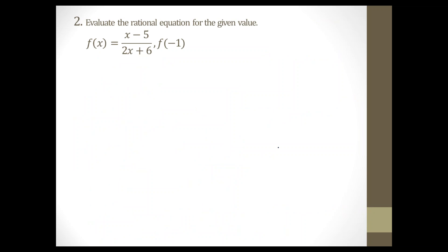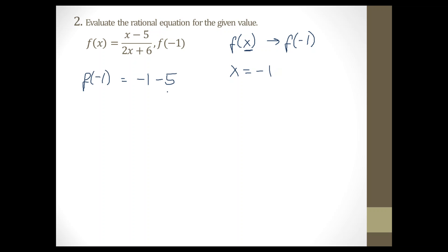Question 2 says: evaluate the rational equation for the given value. We have f(x) equals x minus 5 over 2x plus 6, and the given value is f(negative 1). When you have a negative 1 in place of x, that means the x value equals negative 1. We're going to use our function and plug in negative 1 for every x value. So: negative 1 minus 5, over 2 times negative 1, plus 6.